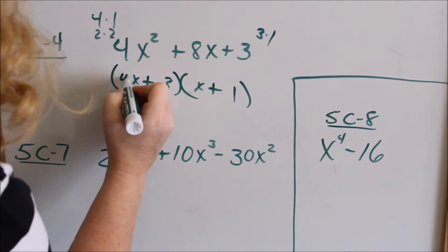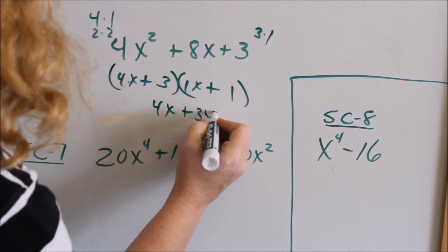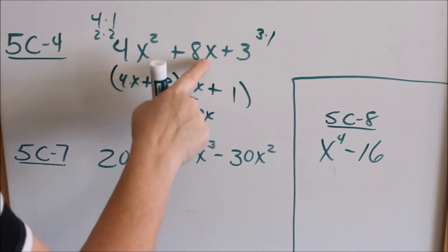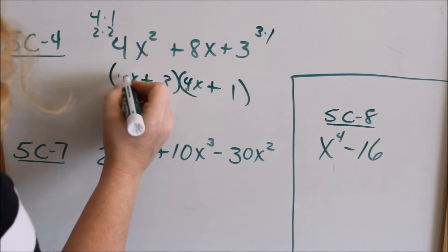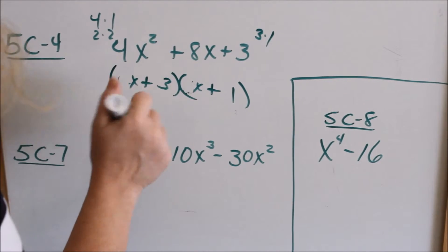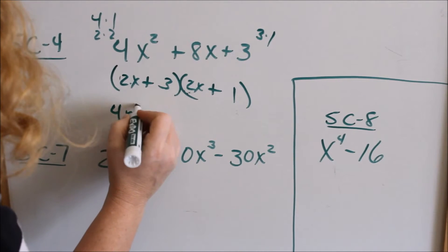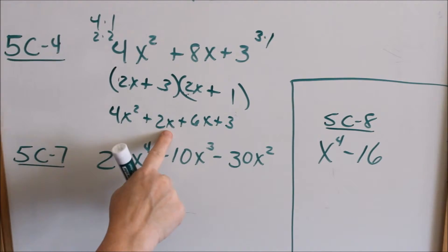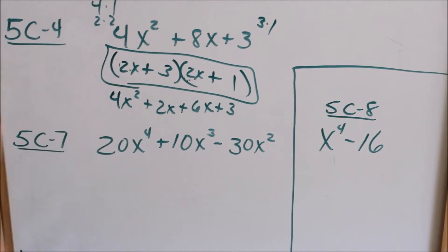What if we had picked 4 and 1? That would have given me 4x plus 3x, which is 7x, and that's not this — so that won't work. Even if we switch the numbers to 4 and 1 the other way, that gives me 1x and 12x, which would be 13x. That still doesn't work. So 2 and 2 is correct: multiplying it out gives 4x squared plus 2x plus 6x plus 3, and 2x plus 6x gives me the 8x. This is the right way for that to be factored.